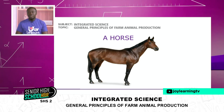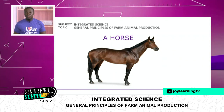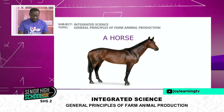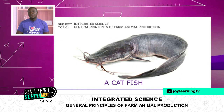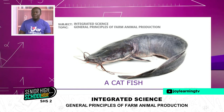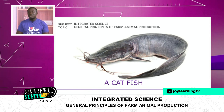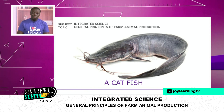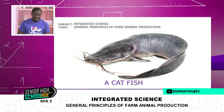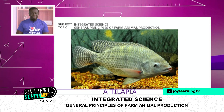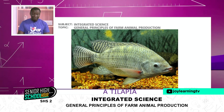A horse — most of us have seen a horse before, whether in reality or on TV. On the screen we have a catfish. We mentioned fishes and a catfish is one of the fishes we often eat; it is also a non-ruminant. We also have tilapia, which is another fish very common on the market.